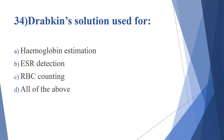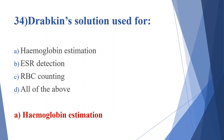Thirty-fourth question: Drabkin's solution is used for. Option A: hemoglobin estimation. Option B: ESR detection. Option C: RBC counting. Option D: all of the above. Answer is option A, hemoglobin estimation.